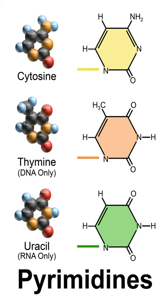Three nucleobases found in nucleic acids — cytosine, thymine, and uracil — are pyrimidine derivatives. In DNA and RNA, these bases form hydrogen bonds with their complementary purines. In DNA, the purines adenine and guanine pair up with the pyrimidines thymine and cytosine, respectively.